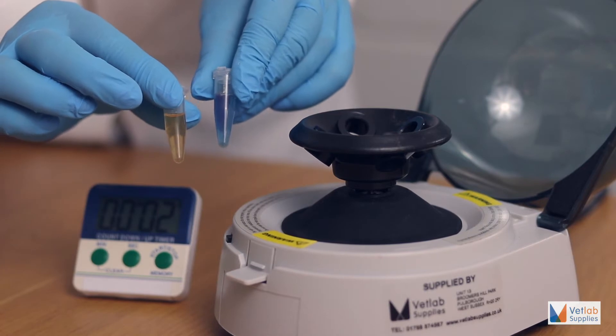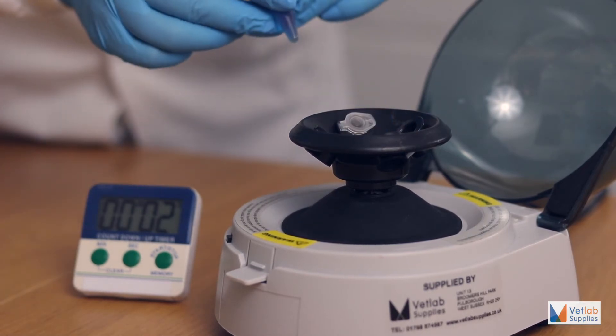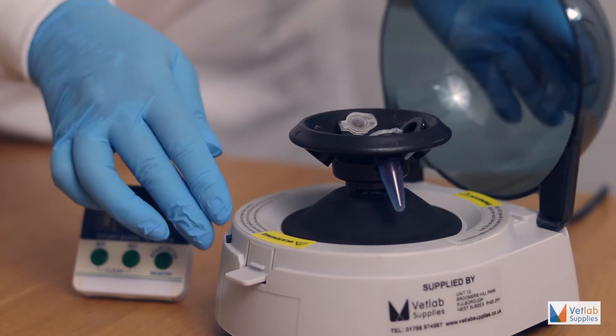Simply load and balance your tubes correctly, close the lid, set your timer and switch on.